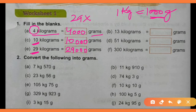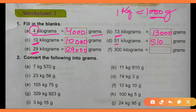इसी तरह से B, D, और F parts solve करेंगे। 13 kilograms में 13,000 grams — put three zeros। Number 51 है तो 51,000 grams। And 300 kilograms में 300 के आगे three zeros put करने पर 300,000 — यानी three lakh grams।